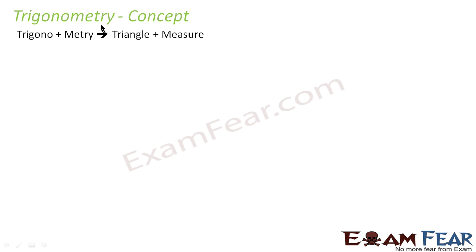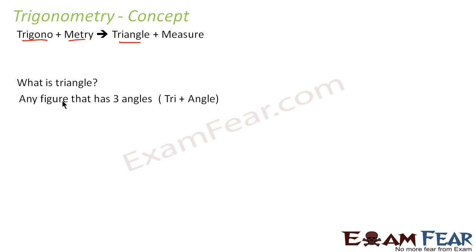The word trigonometry comes from 'trigono' plus 'metric' — trigono means triangle, anything that has three sides, and metric means measure. So trigonometry is essentially triangle plus measure. Triangle itself breaks down as 'tri' plus 'angle' — anything that has three angles.